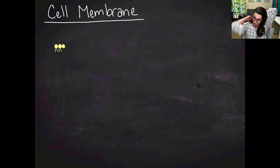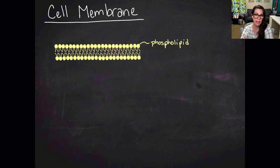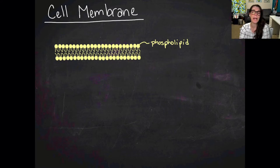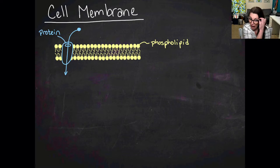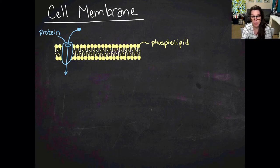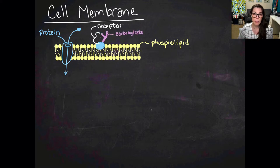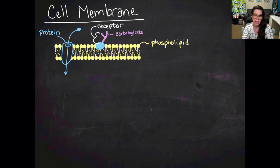Hi, this is Ms. Delosier, and these are your notes on the cell membrane and transportation through the cell. The cell membrane is a phospholipid bilayer — two layers of phospholipids with fatty acid tails pointing at each other. It also contains proteins that act as channels to allow things to pass through, making the membrane selectively permeable. There are also peripheral proteins with receptor attachments, typically carbohydrates, that allow outside signals to communicate with the inside of the cell.